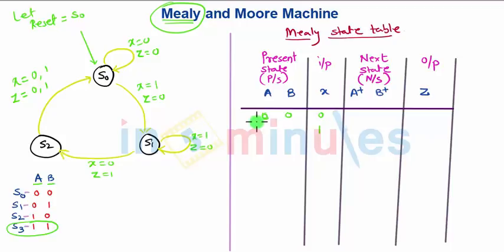So for A, B equals 0, 0, that is nothing but state S0. If input is 0, it will move to the same state S0. Hence the next state will be again S0, therefore 0, 0 and output is as mentioned 0.